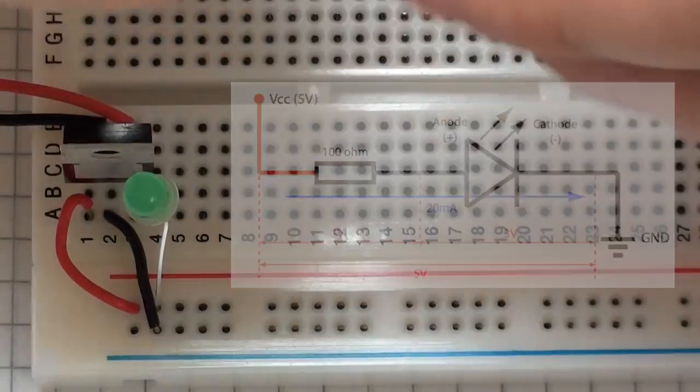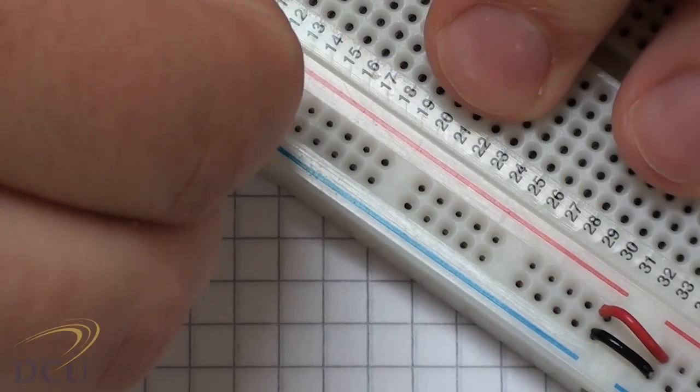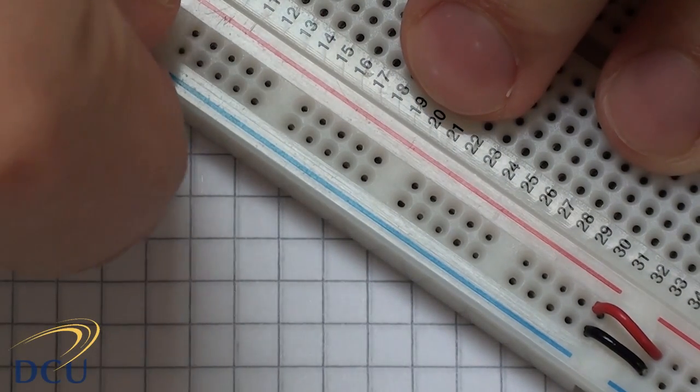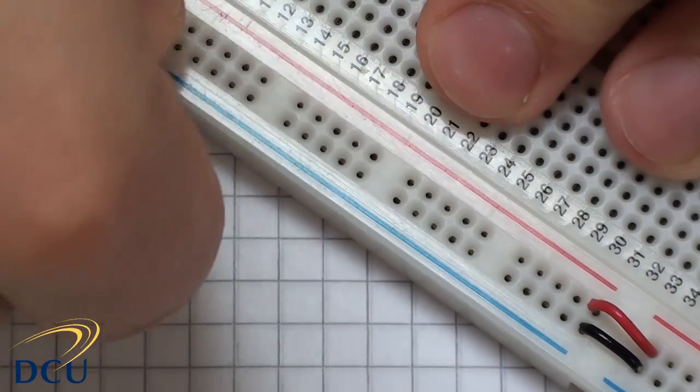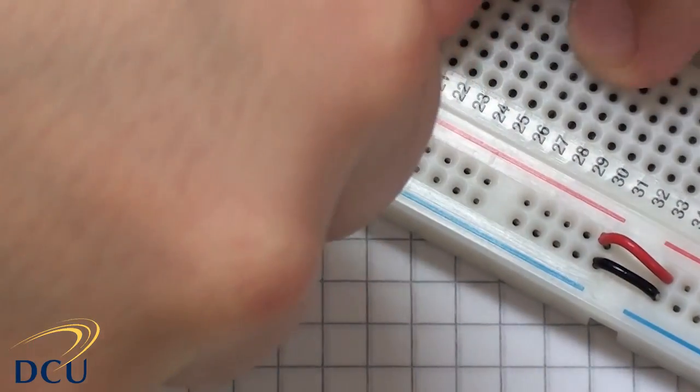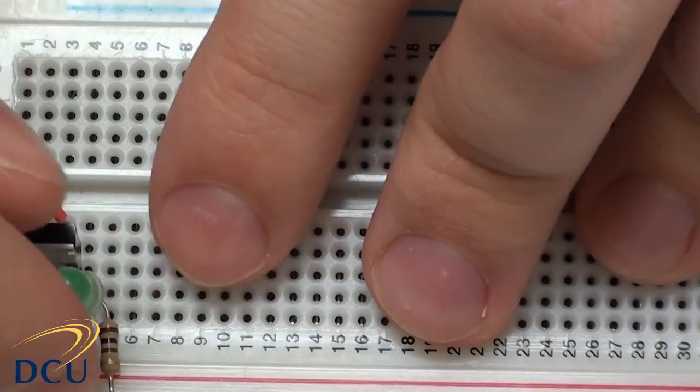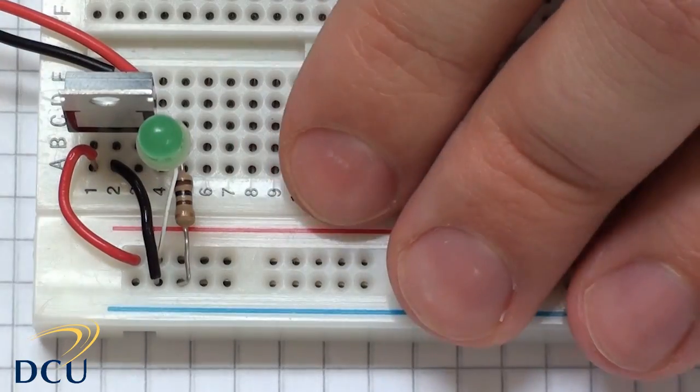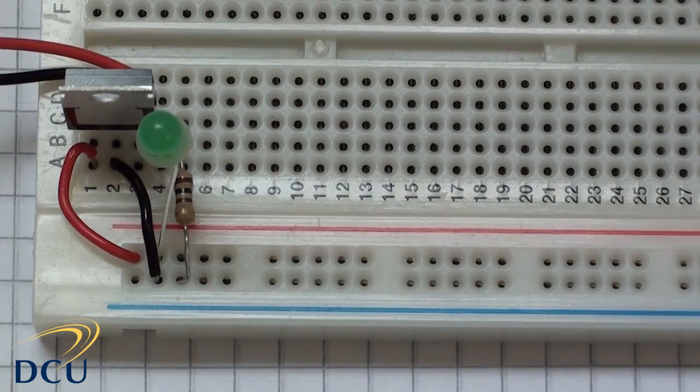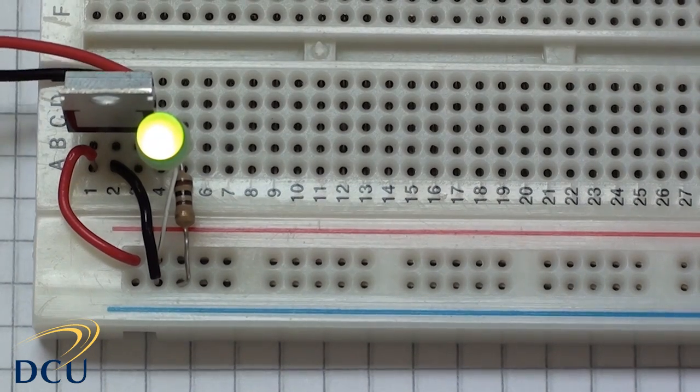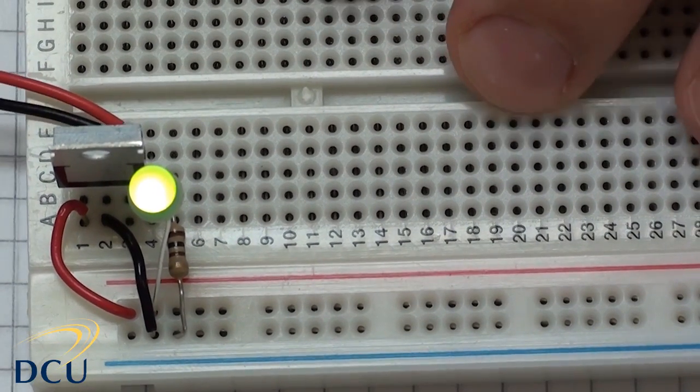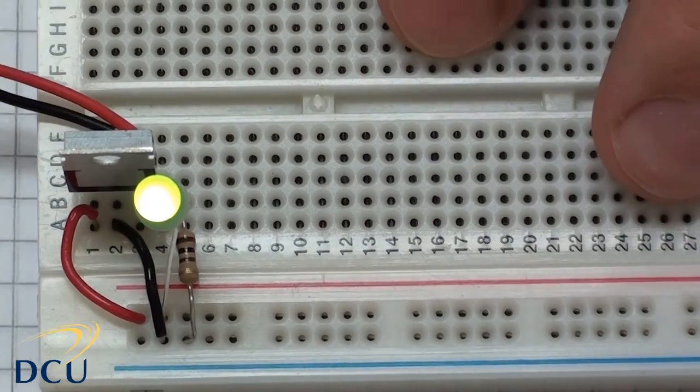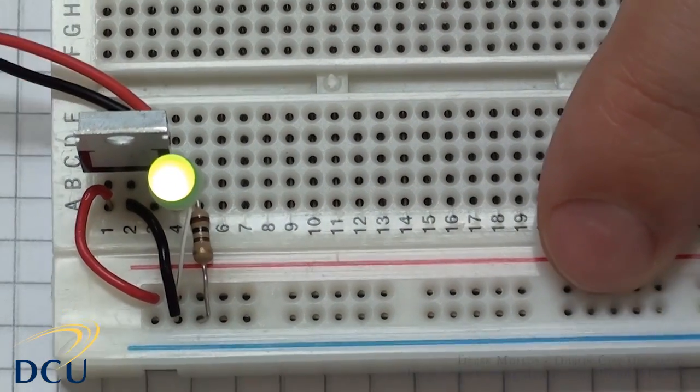We need to plug it from the ground rail into our row 4. Just make sure that it's not shorting out with the positive pin of the LED. So just keep the gap there. We connect in our supply, and we should see that when we do, our LED lights up. So this indicates that our supply is connected and that our battery isn't flat. So we know that our circuit is working correctly.